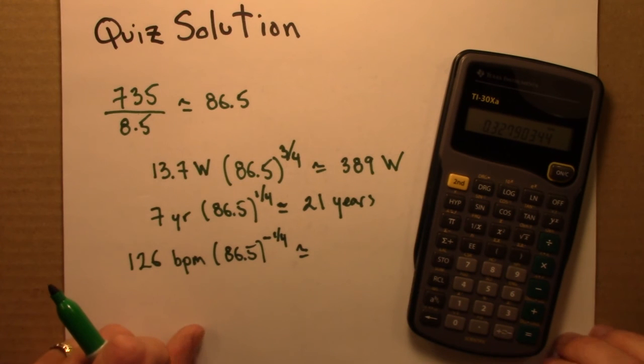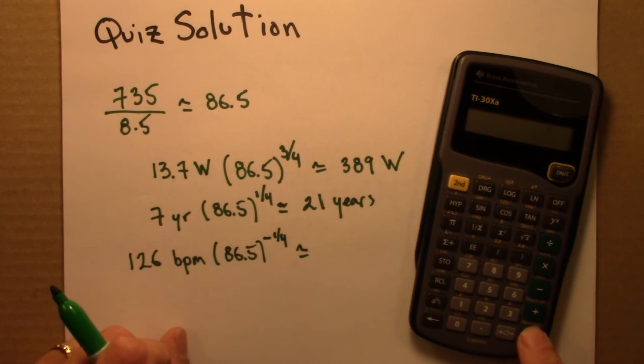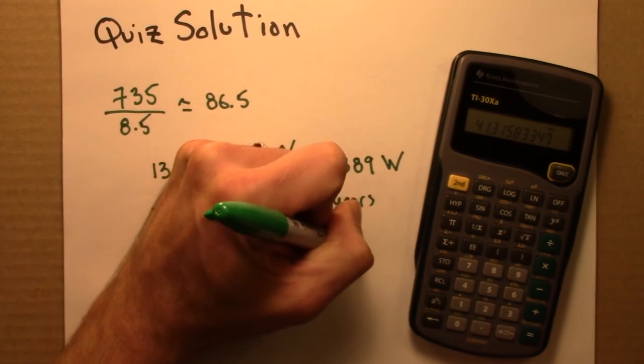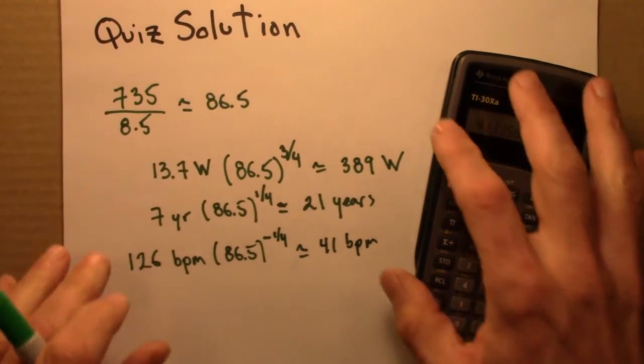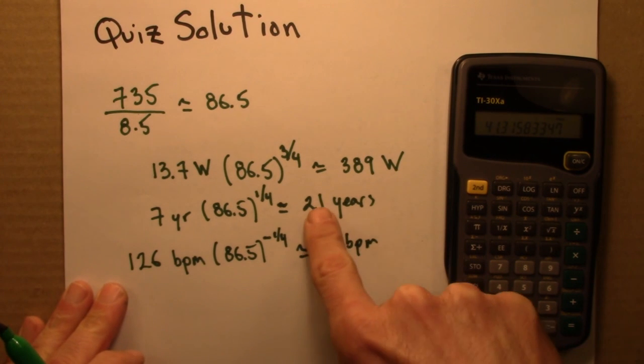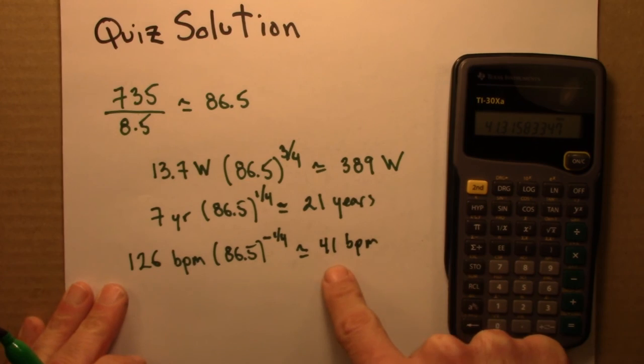Multiply that by 126, I get a heart rate of about 41 beats per minute. So the sea lions have a longer lifespan and a slower heart rate.